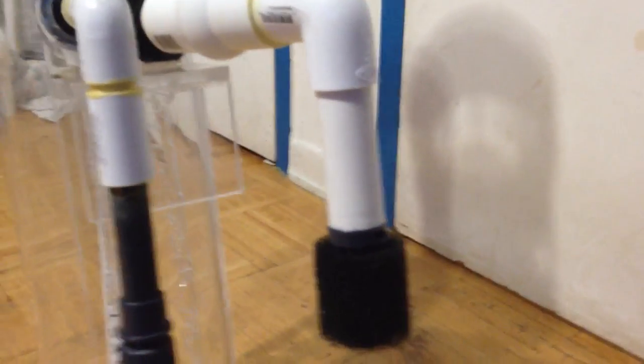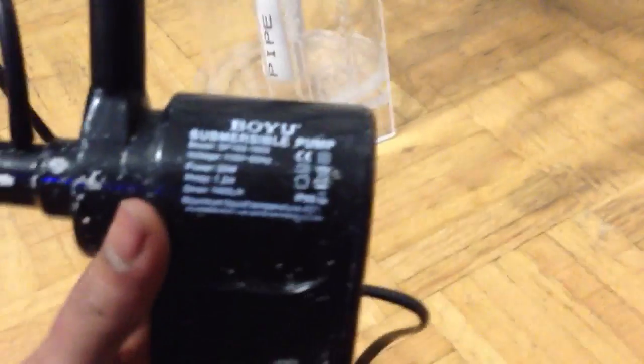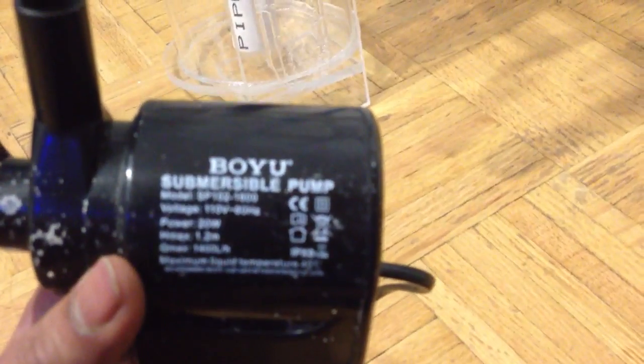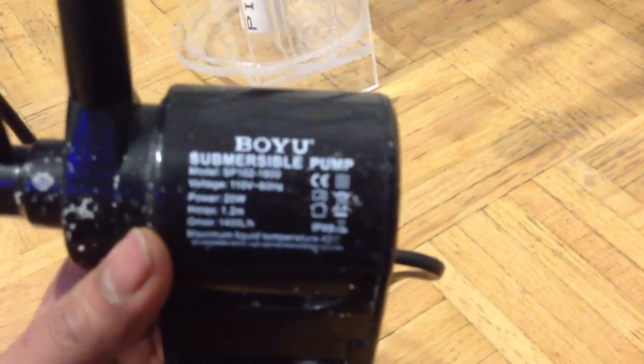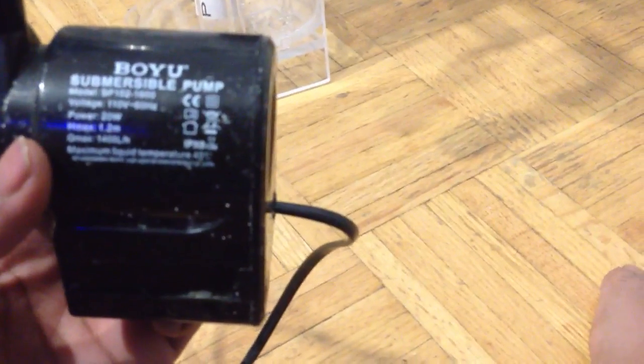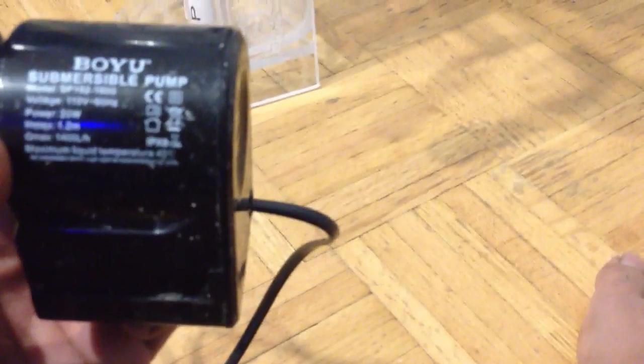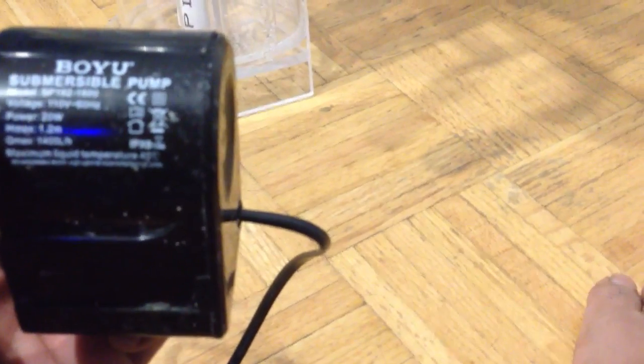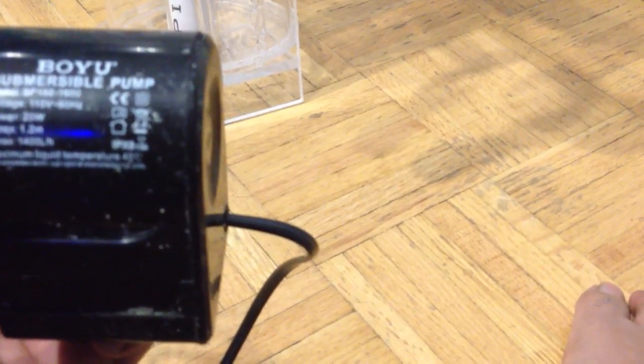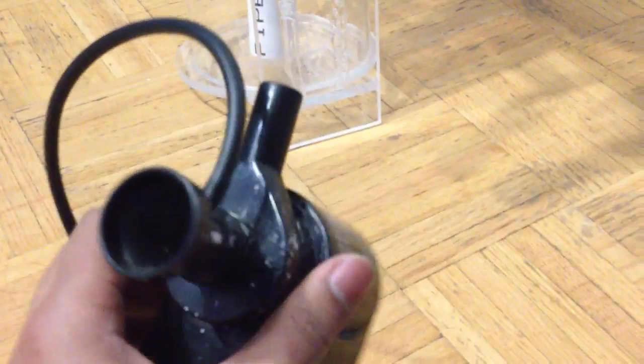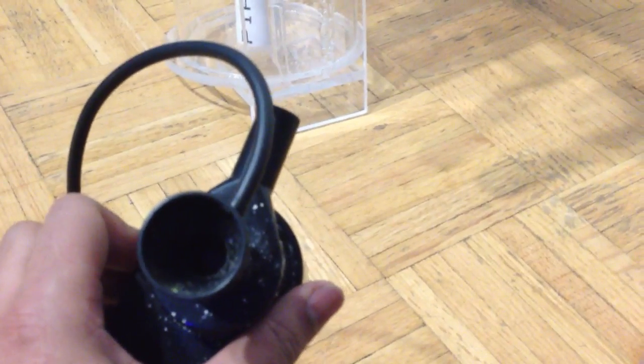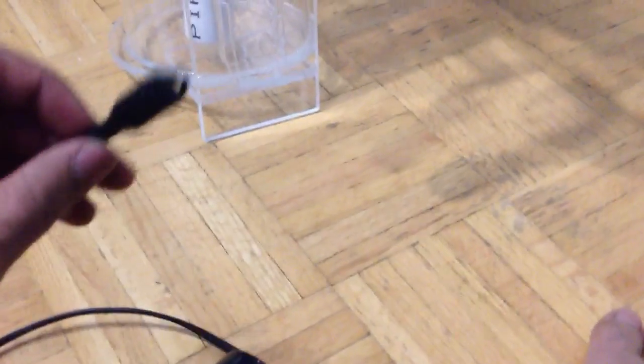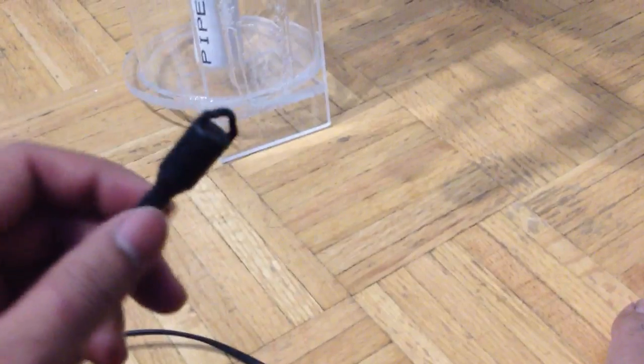So this pump that I have here, it is a cheap Chinese pump for now. I know you guys know that company, Boyu or whatever the hell you call it. But it is a submersible pump. The model number is SP102-1600. Power consumption is 20 watts. There you go. You have the venturi effect that's going to draw the water, the bubbles from the tube here. And from the tube you can actually adjust how much air you want in and out.